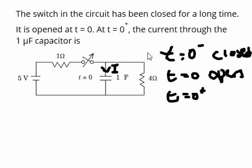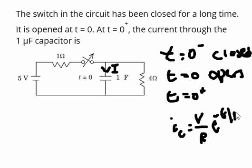The current through the capacitor we all know, Ic is equal to voltage across the capacitor by resistors into e to the power of minus t by RC. This is the equation for calculating the current through the capacitor.